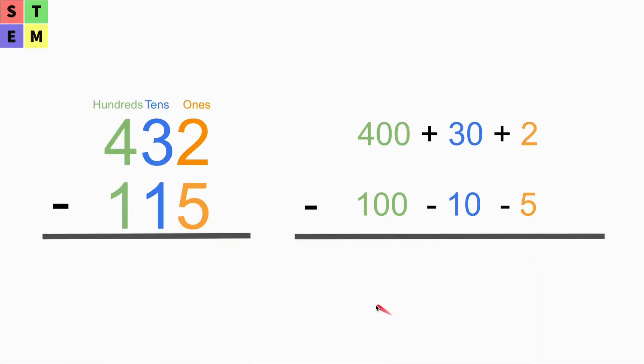Now let's take a look at what we have here. We have 432 minus 115.